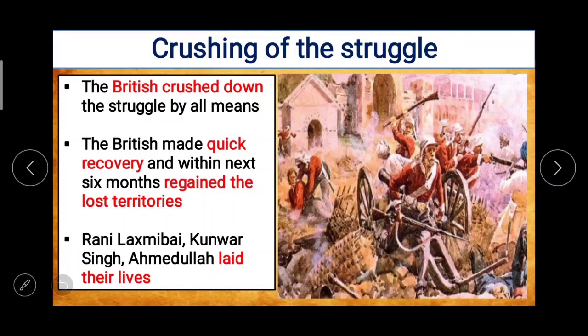The Indians wholeheartedly fought against the British — including soldiers, zamindars, kings, commanders, and common people. The Indian sepoys started the freedom struggle before the fixed time and initially they succeeded, but the military strength and administration of the British rule was vast. The British crushed down the struggle by all means, made quick recovery, and within the next six months regained the lost territories. In this, Rani Lakshmi Bhai, Kuma Singh, and Aya Madhula led their lives.